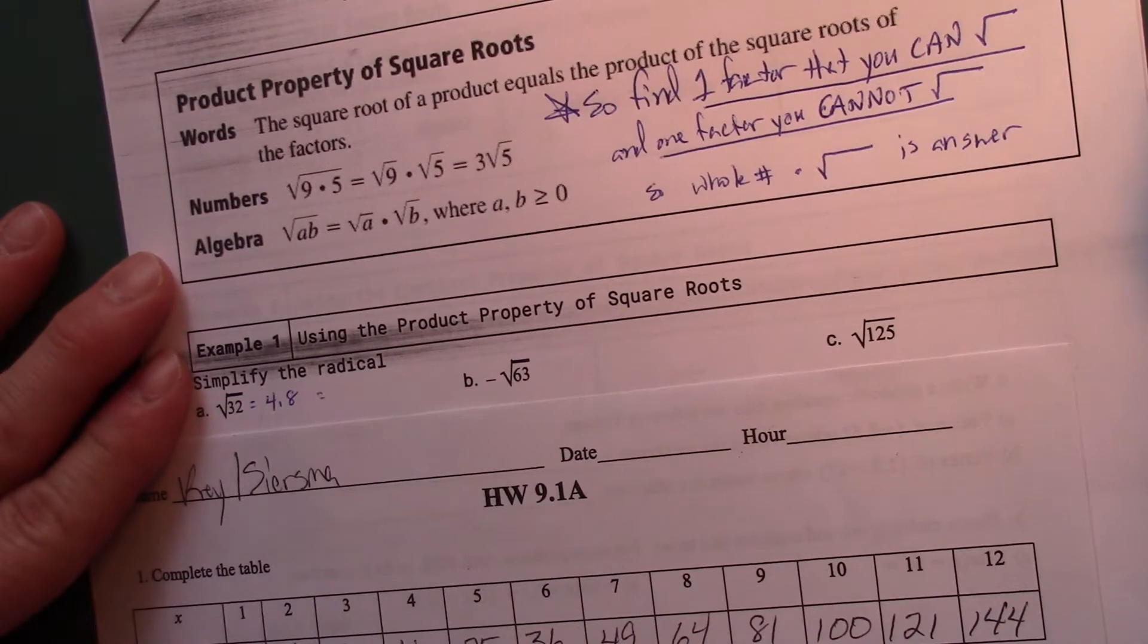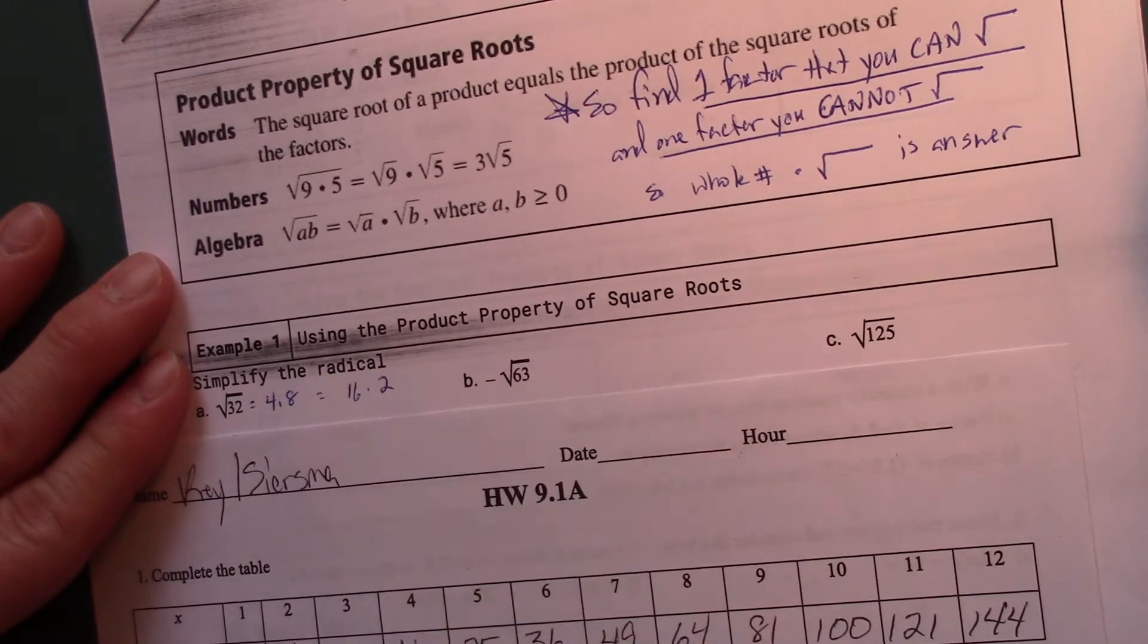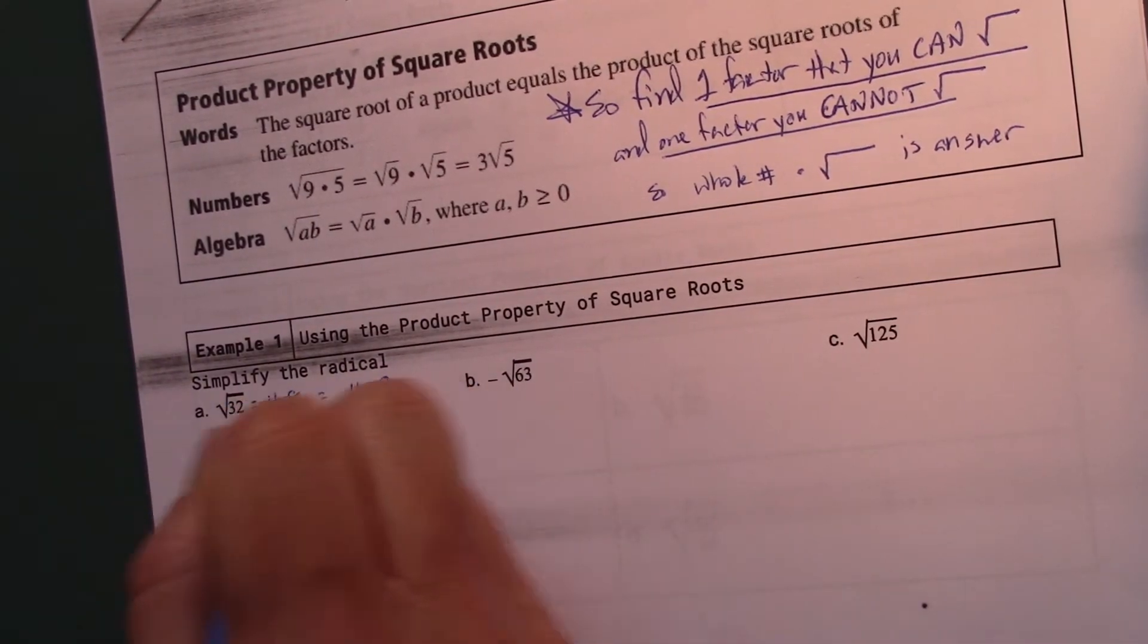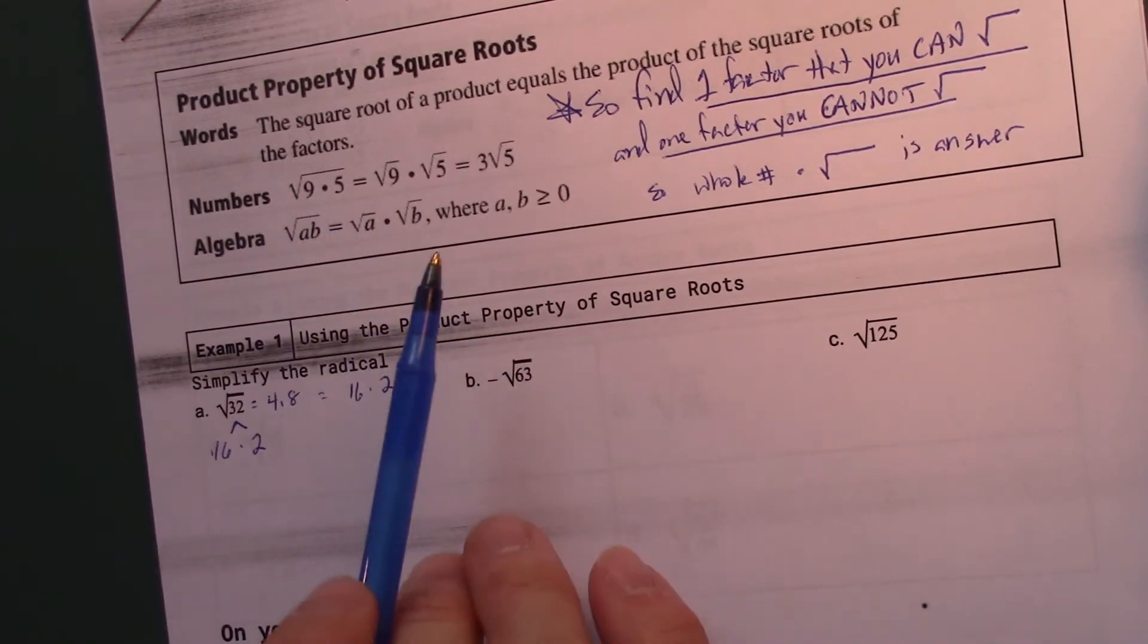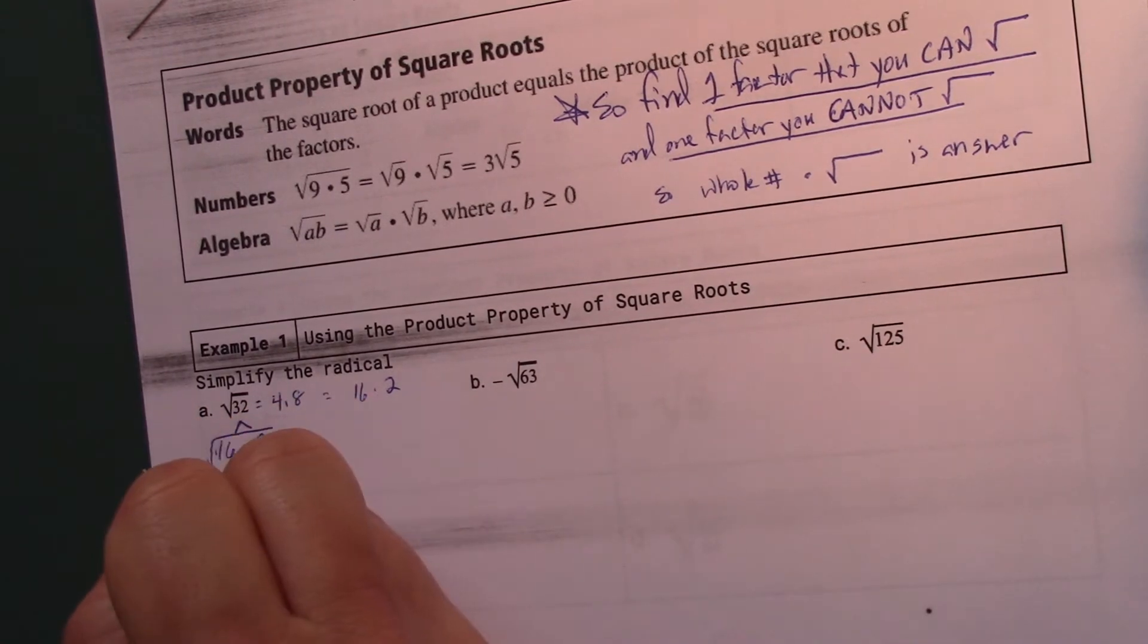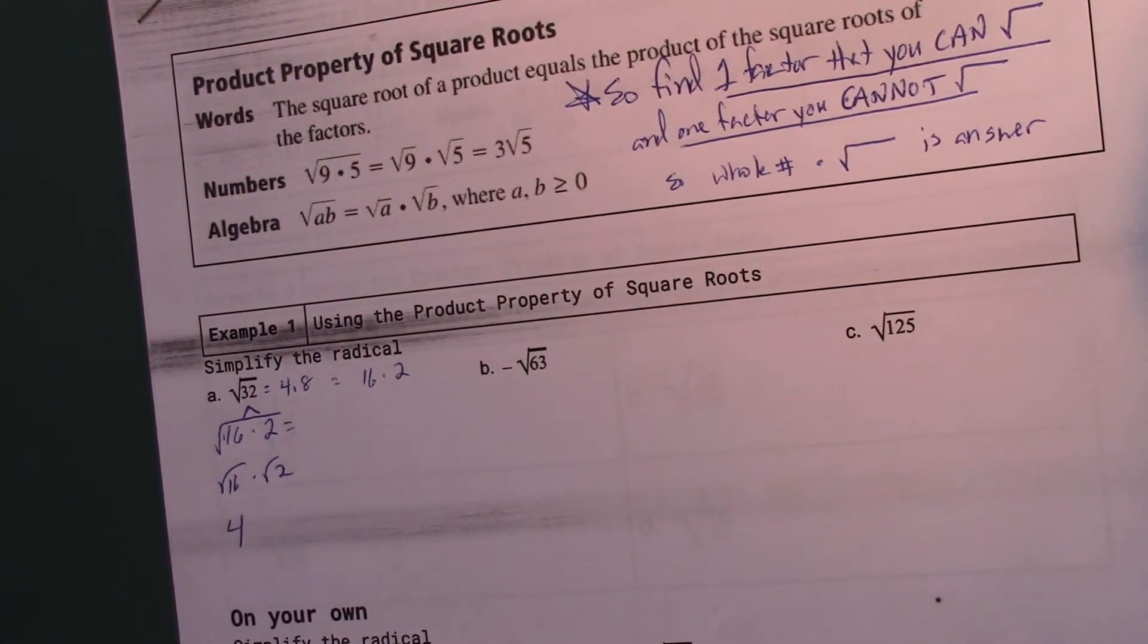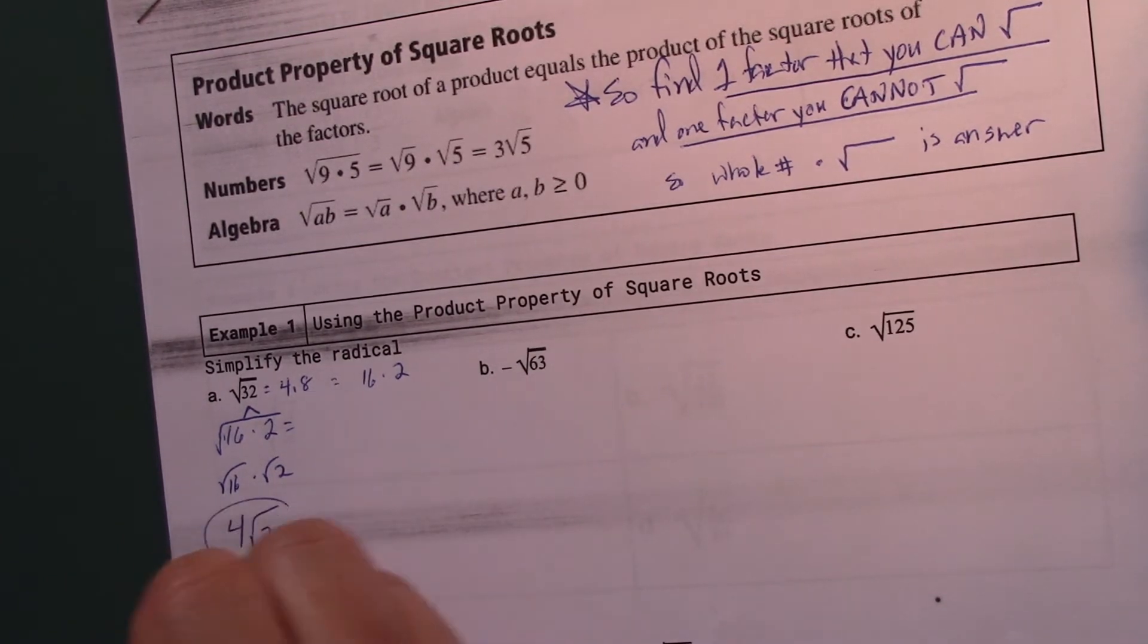Let's see. 9, does that go into 32? No. 16 goes into there twice. So that's how we can do it. Let's take a look at breaking this down into 16 times 2. And what your square root property says is that we can split those up. Instead of square root of 16 times 2 I can rewrite that as square root of 16 times the square root of 2. And now I have something that I can square root, 16 which is 4.